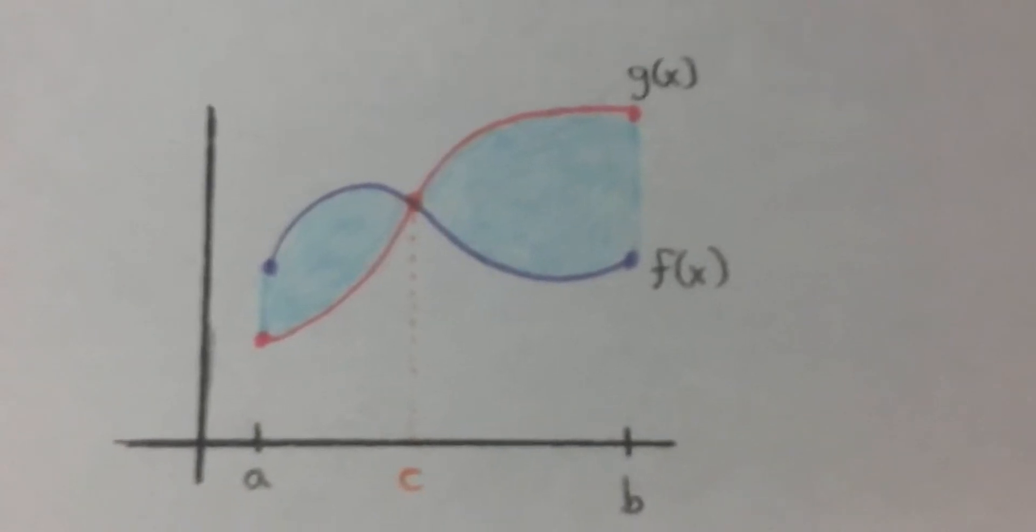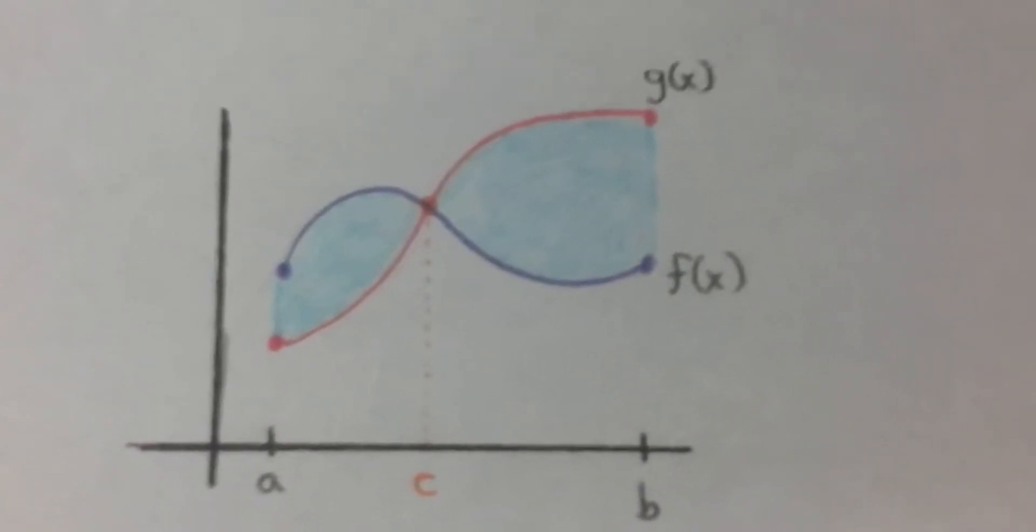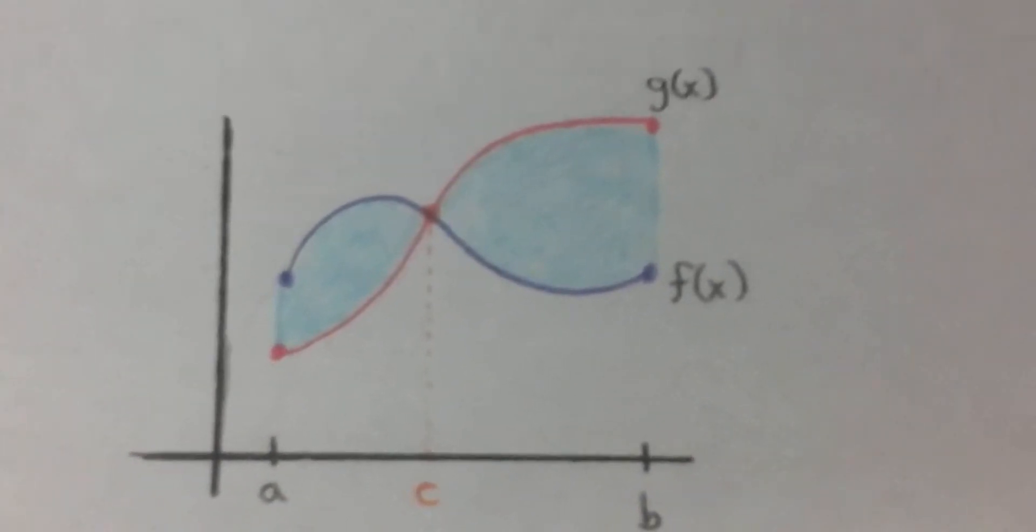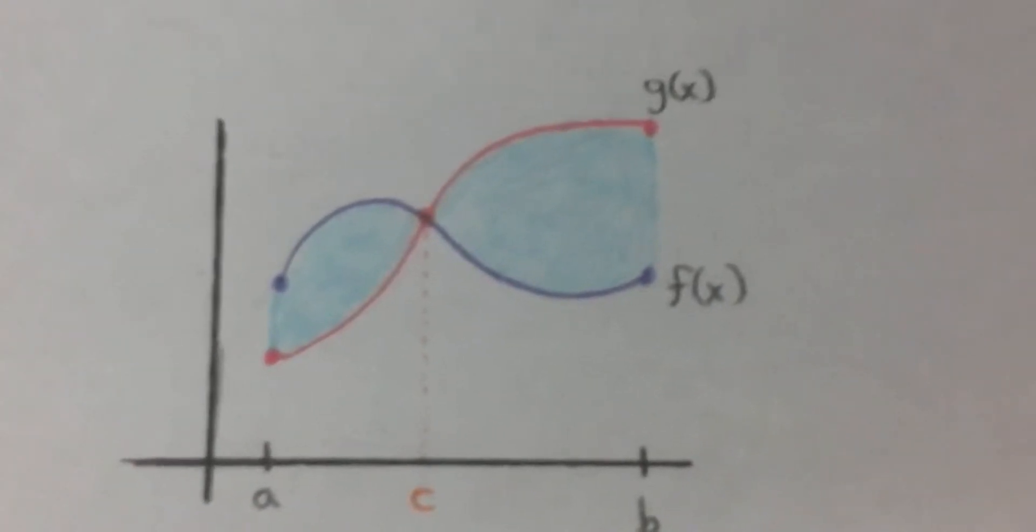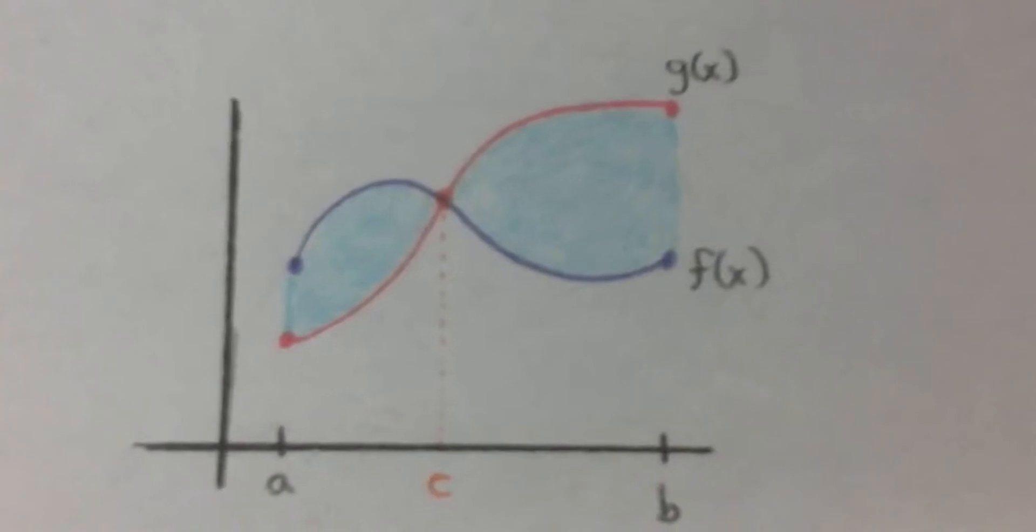So notice here that I've got two curves, f of x and g of x, and they cross at the point c. And I want to figure out what the area between the two curves is on both sides of c.